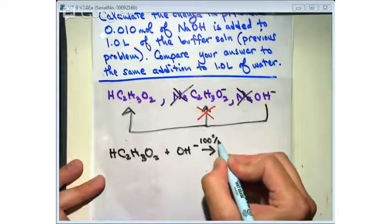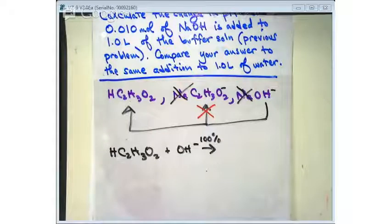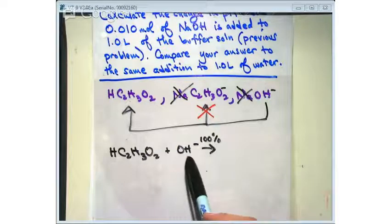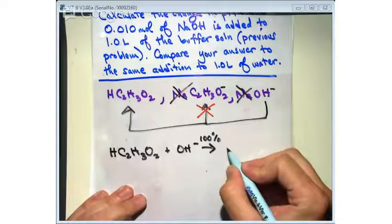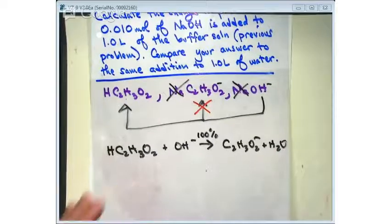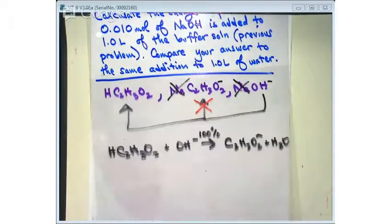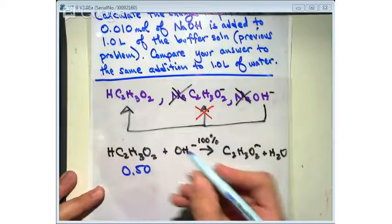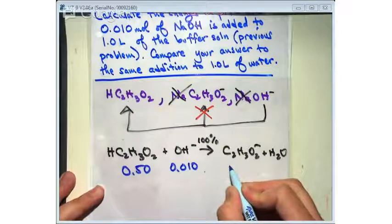The reaction is going to look like this — the buffer is trying to neutralize the base that was just added. I'm going to tell you this reaction will go forward 100%. Why? Because I have a strong base. Whenever you have a strong base in the reactants, it's going to force the reaction forward 100% — the same concept from the previous chapter. That acid loses a proton, the base gains a proton. Let's write in our numbers: 0.50 from the previous problem, 0.010 from this problem, and 0.50 from this problem.